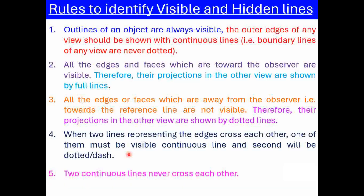The next rule: two continuous lines never cross each other. And the last one: two hidden lines never cross each other. When intersecting lines are present, both cannot be continuous dark lines and both cannot be dashed lines.